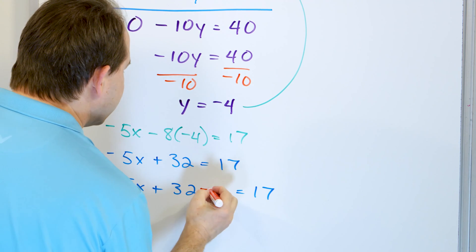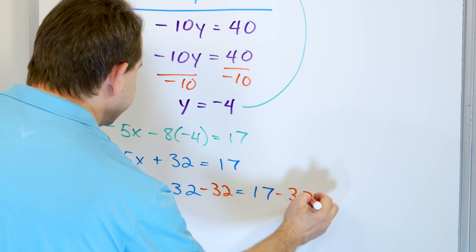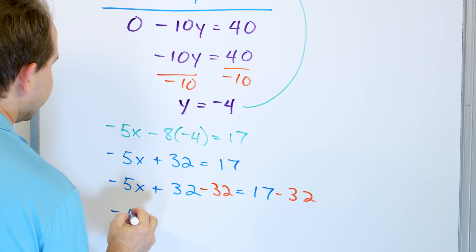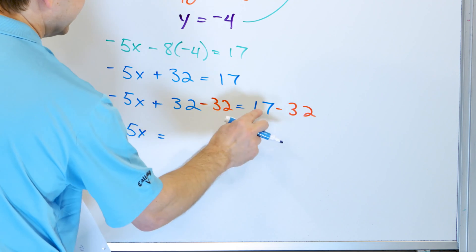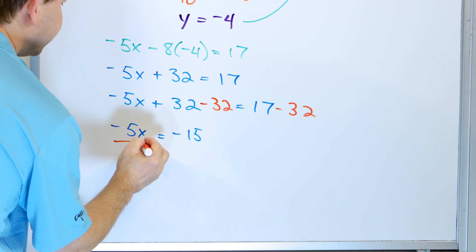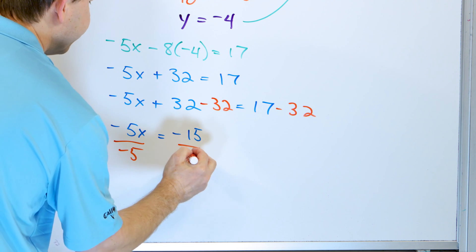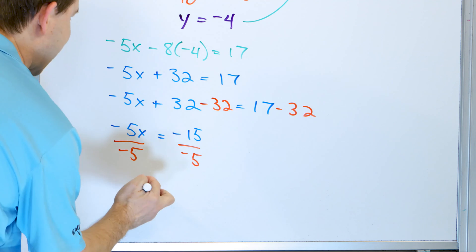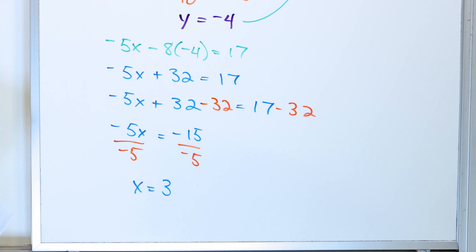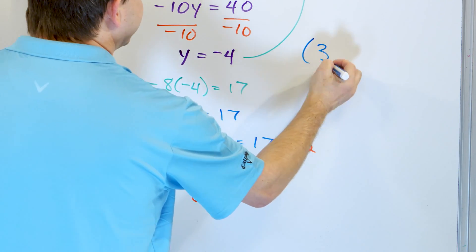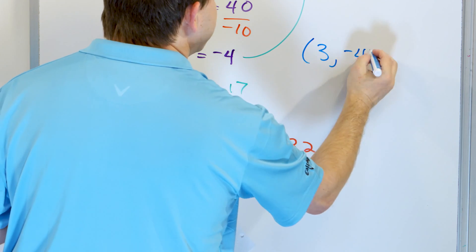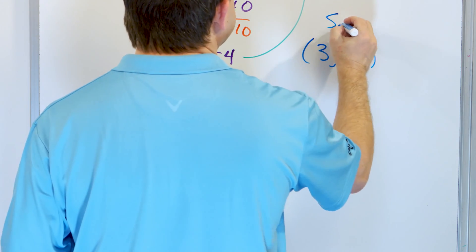To get the number to the other side, I'll subtract 32 from both sides. This goes to 0, leaving negative 5x equals negative 15. Dividing by negative 5, the 5s cancel and I get x equals positive 3. So putting it all together, an x value of positive 3 and a y value of negative 4: the point 3, negative 4. This is the solution — the intersection point of both lines.